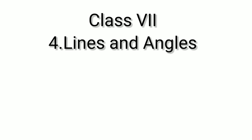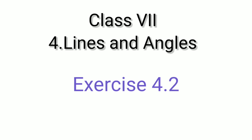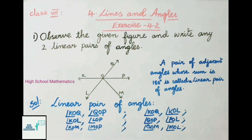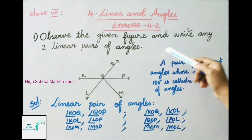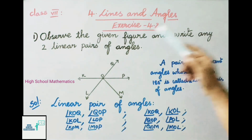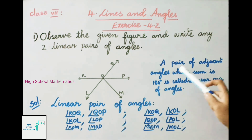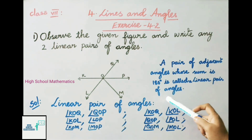Hello everyone, welcome to High School Mathematics channel. Today we are going to learn Class 7 Chapter 4 Lines and Angles, Exercise 4.2. First, let us see what is a linear pair of angles: a pair of adjacent angles whose sum is 180 degrees is called a linear pair of angles.